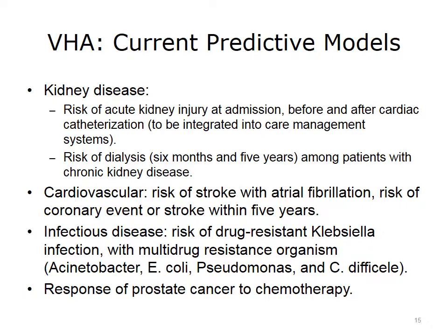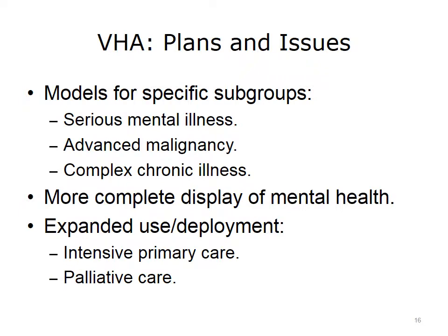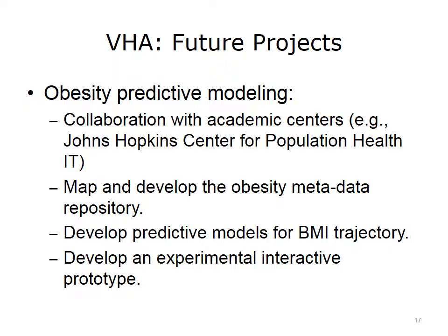Note that some of these risk models could be considered quasi-population health and clinical care predictive models. The VHA plans to develop the following solutions to remedy the existing issues in population health analytics: models for specific subgroups such as populations with serious mental illnesses, subgroups with advanced malignancies, and patients with complex chronic illnesses, more complete display of mental health issues, and expanded use and deployment of population health predictive models in intensive primary care and palliative care. The VHA has planned for multiple future population health predictive modeling projects and is actively collaborating with various academic centers to develop innovative predictive models for population health. One example is VHA's collaboration with the Johns Hopkins Center for Population Health IT to better predict obesity among the veteran population.